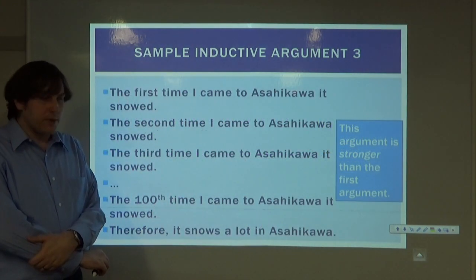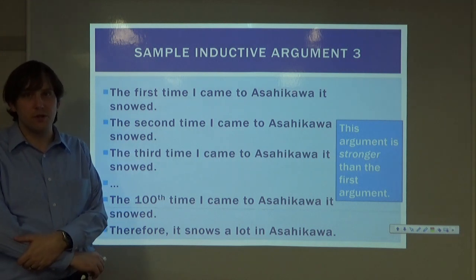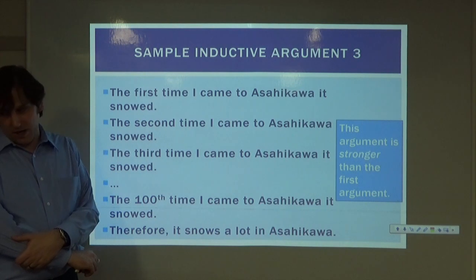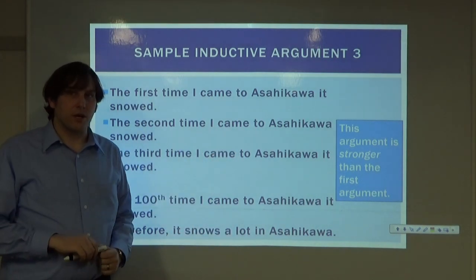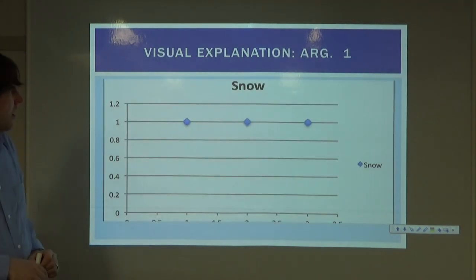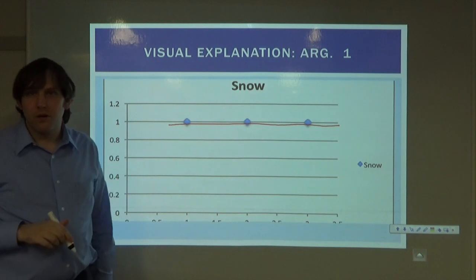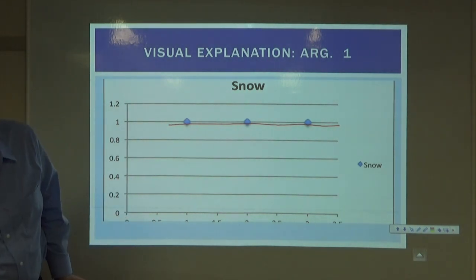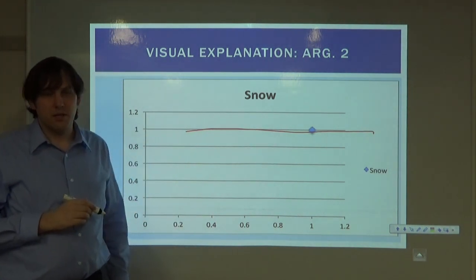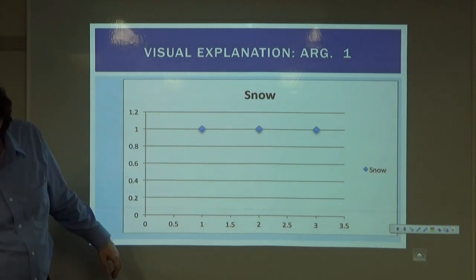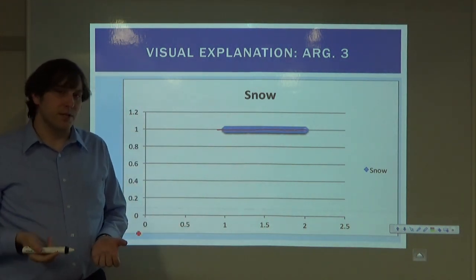A third sample argument: 'The first, second, third, fourth, fifth... and hundredth time I came to Asahikawa, it snowed. Therefore, it snows a lot in Asahikawa.' We've increased the amount of data significantly, which strengthens our conclusion. With one data point, the argument is very weak. With three, it's better. With a hundred, the argument seems very plausible — we've shown many reasons to accept it.